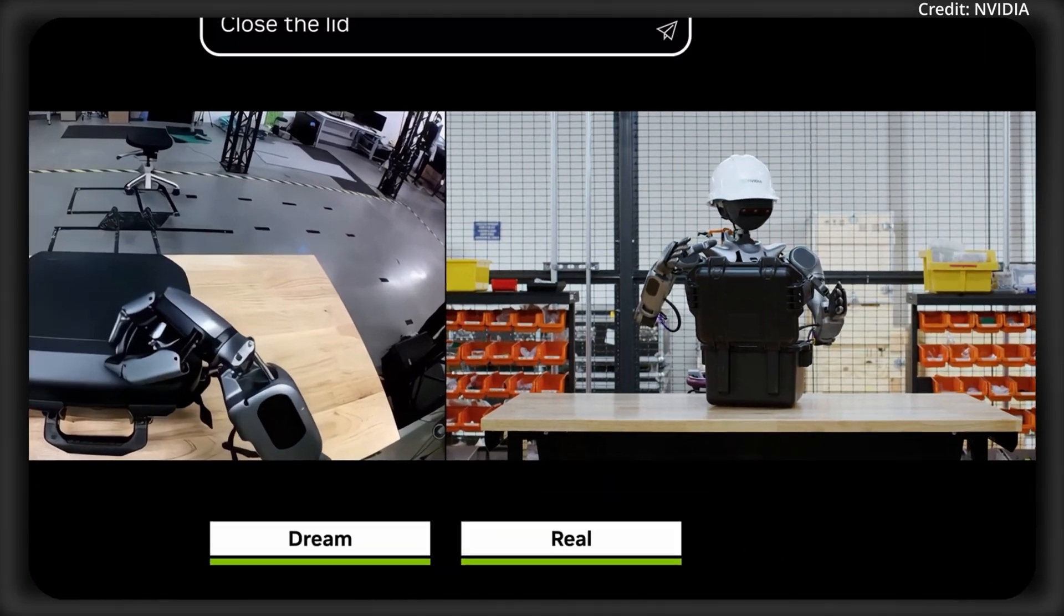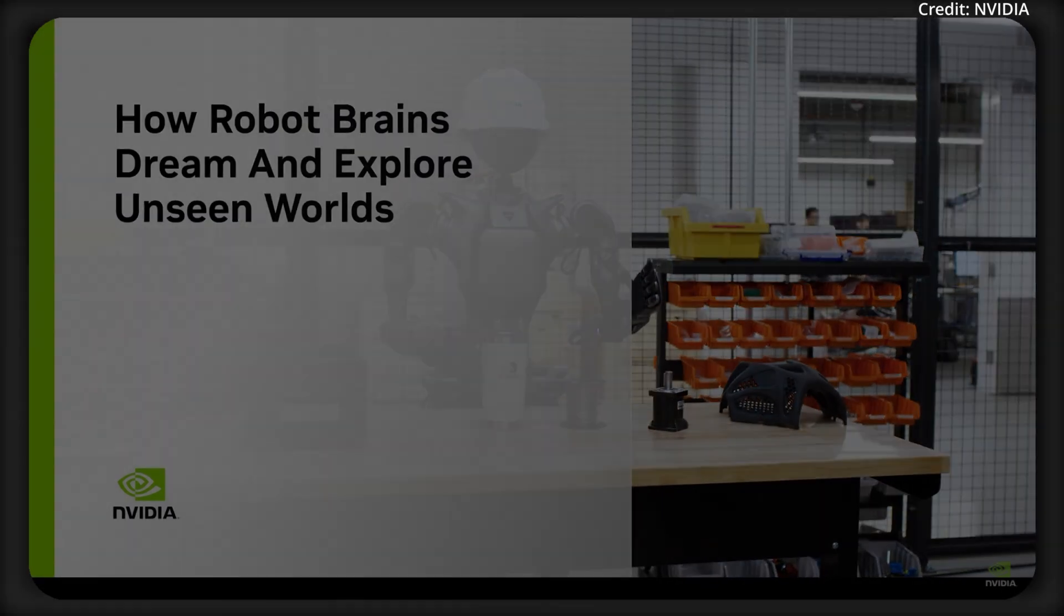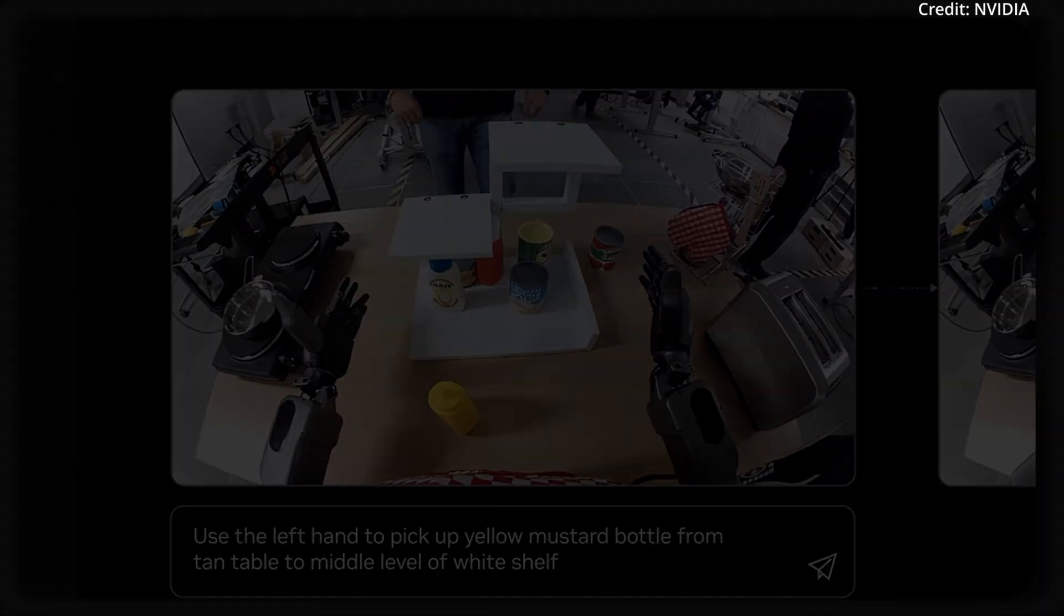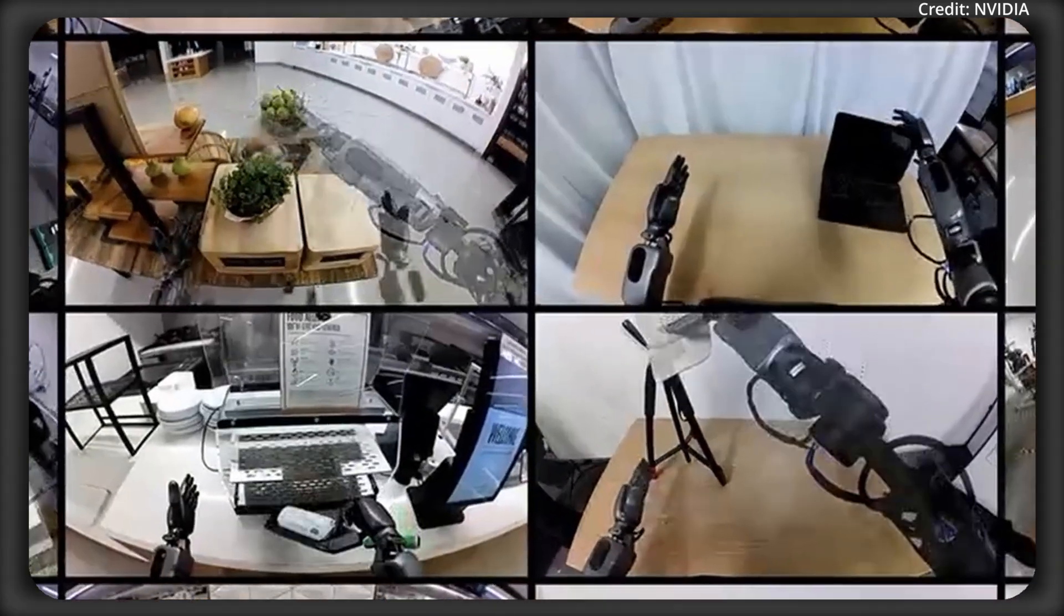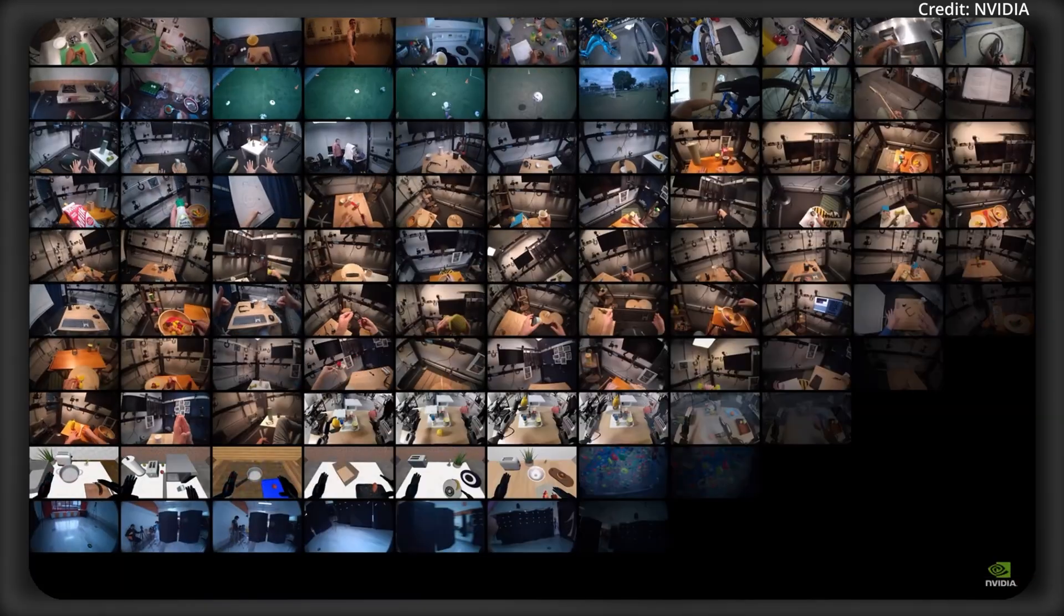starting with a physical intelligence breakthrough for humanoid robots called Groot Dreams Blueprint. And it's built on NVIDIA's Cosmos in order to tackle one of the biggest hurdles in robotics so far, which is the data bottleneck. And to explain this simply, in order to train robots to do new tasks, it usually requires endless human demonstrations, which are both expensive and time-consuming.